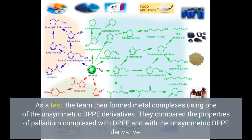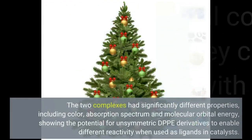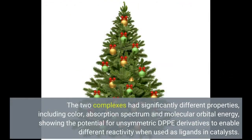As a test, the team then formed metal complexes using one of the unsymmetric DPPE derivatives. They compared the properties of palladium complexed with DPPE and with the unsymmetric DPPE derivative. The two complexes had significantly different properties, including color, absorption spectrum, and molecular orbital energy, showing the potential for unsymmetric DPPE derivatives to enable different reactivity when used as ligands in catalysts.